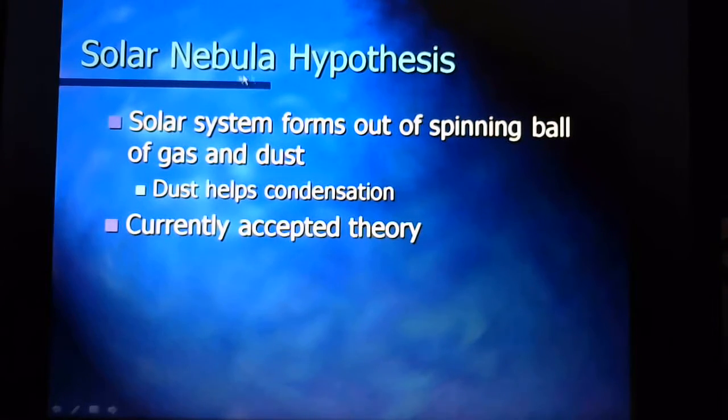So this becomes our solar nebula hypothesis which is our current theory of how the solar system formed. It would have started with a spinning ball of gas and dust and it's important to say that there's dust because I hope you know that you get raindrops forming in clouds because there's a speck of dust that allows the water vapor to start to condense onto the dust and form a drop. So dusts help condensation. You can't just start with only gas. This is our currently accepted theory and so this is the one that we're going to explore now in more detail.